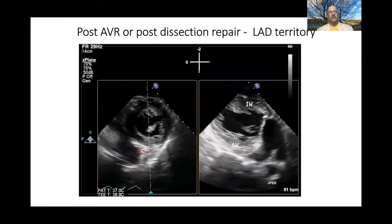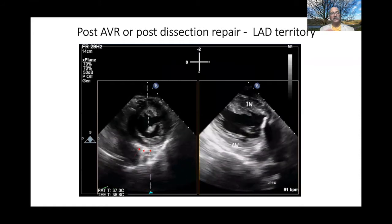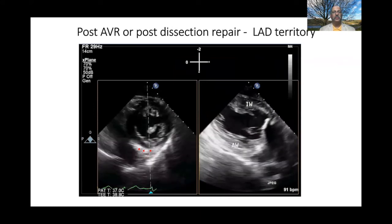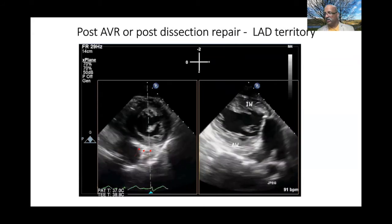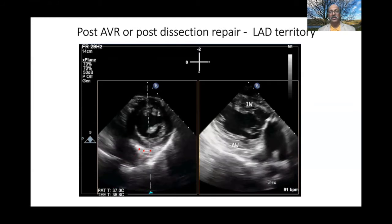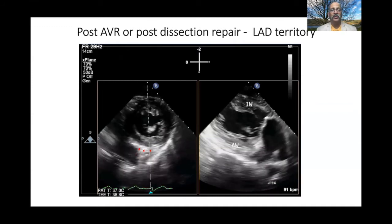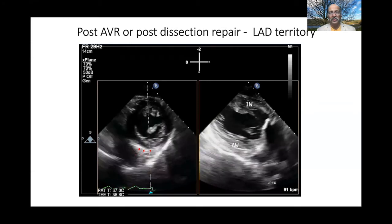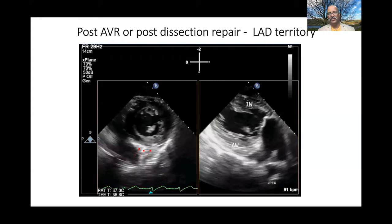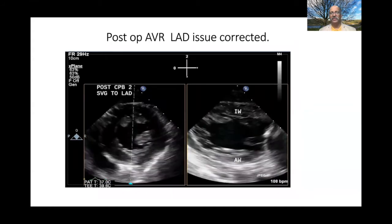Here is another case of post-valvular surgery. Post-AVR, in this particular scenario, there was an LAD territory problem. Usually the coronary ostia are managed during aortic valve procedures. The same is true for post-dissection repairs, which are emergency procedures with no prior angiography — you have to rely on the left ventricular short axis view to assess coronary problems. In this case, a graft was placed on the LAD and things improved as soon as the graft was put in.